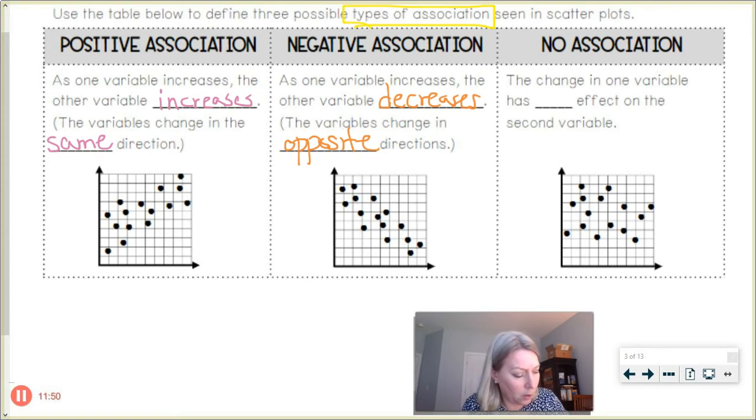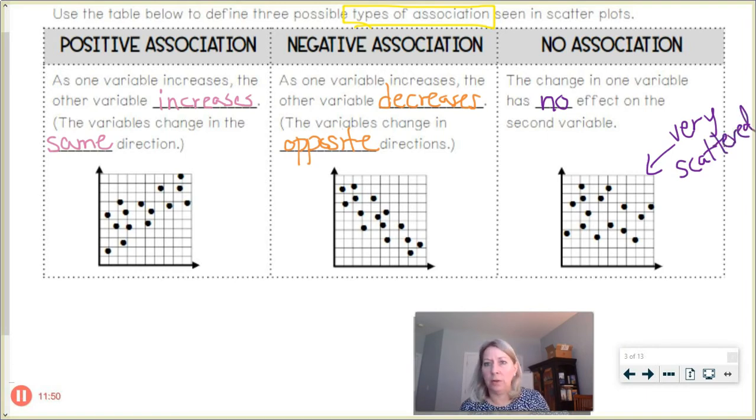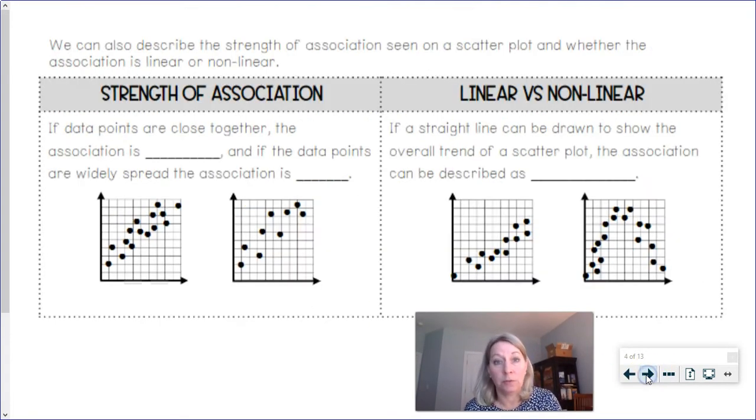All right, then there's a situation when there's no association. Kind of things are all scattered about so much so that you can't really see any kind of trend. So the change in one variable has no effect on the second variable. So notice how all these dots look very scattered, kind of all over the place. It's hard to really pick out are things changing in a downward or upward trend. All right, so that's our three types of association.